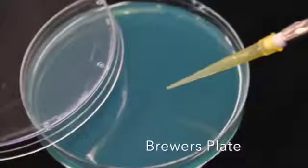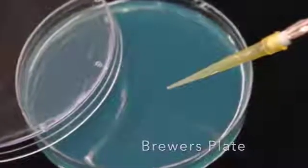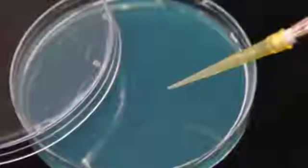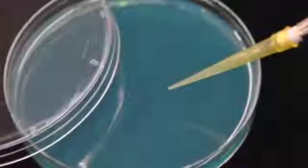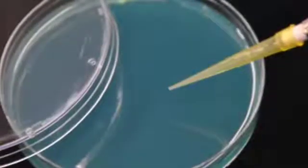A Brewer's plate will sometimes be used during this procedure because it contains thioglycolate, which will protect anaerobes and microaerophiles from oxidizing prior to being placed in the anaerobic jar.